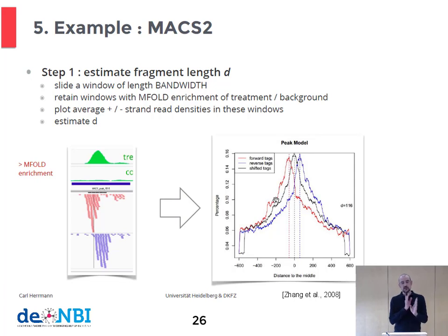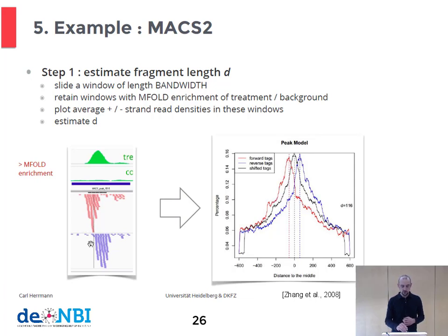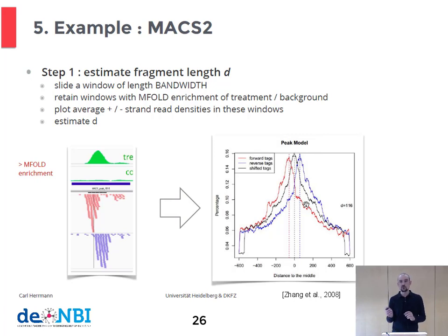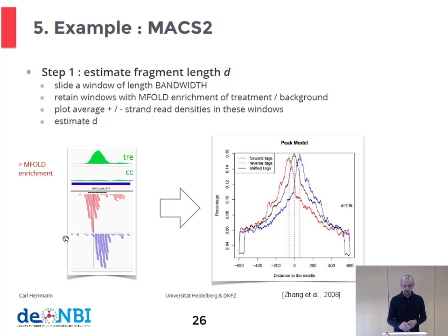The first step in MACS2 is to estimate the fragment size, regardless of whether we do read extension or read shifting. Either we know the fragment size from the experiment, or we can estimate it from the typical ChIP-seq pattern — the shift between the plus and minus strand. From this shift between the peaks of the two pileups we can estimate the fragment size. This is displayed on the right hand side, showing the profile of reads on the plus strand and minus strand, where we estimate the fragment size from the distance between the peaks. The regions showing apparent enrichment are extracted, and from these we determine these profile plots and estimate the fragment size.